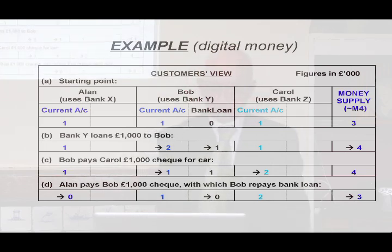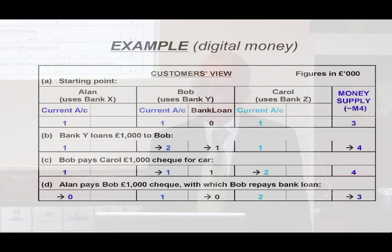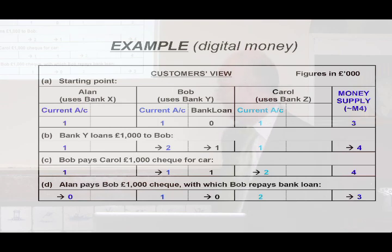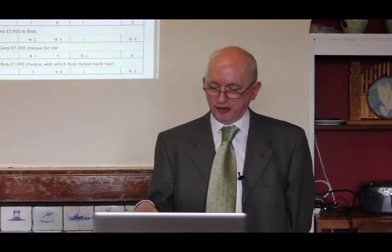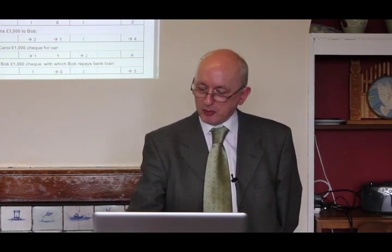So Alan's current account goes down by £1,000. Bob's current account doesn't change but instead he's paying back the bank loan and his loan account now goes down to zero. If we look at what's happened to the money supply, that's now 0 plus 1 plus 2 — it's now gone down to £3,000. Through that whole process of the loan being repaid, the money supply has shrunk again back to where it was at the beginning. Nobody's actually cancelled or destroyed anything in any active way — it's just a consequence of the system that £1,000 of spending money has disappeared.